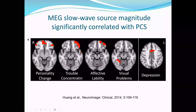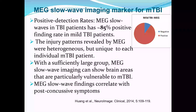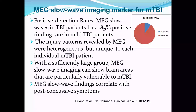We also did correlation analysis of the abnormal MEG slow wave generation with different symptoms. There is a positive correlation between frontal delta wave and personality change, frontal region with trouble concentrating and affective lability, the fusiform area with visual problems, and the anterior cingulate area with depression. So the abnormal delta wave correlates with the patient's symptom scores. This gives us a good MEG marker based on the MEG slow wave with approximately 85% sensitivity — much better than CT/MRI for mild TBI.